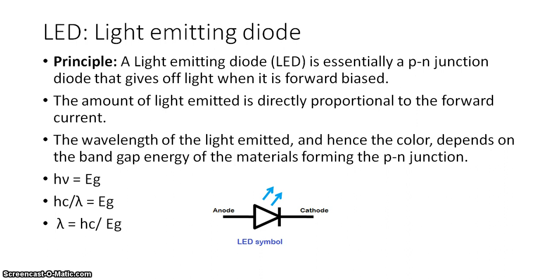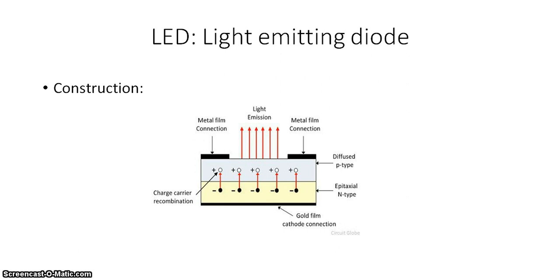This slide shows the working and picture of a LED — a light emitting diode. A light emitting diode is essentially a pn junction diode that gives off light when it is forward biased. The amount of light emitted is directly proportional to the forward current, and the value of the wavelength depends upon the energy gap of the pn junction. This diagram shows the fabrication of a LED, which is essentially a pn junction.